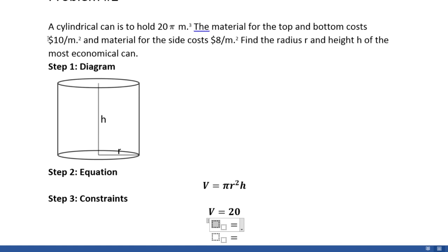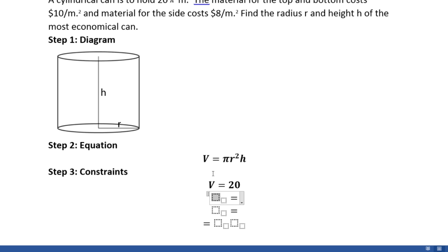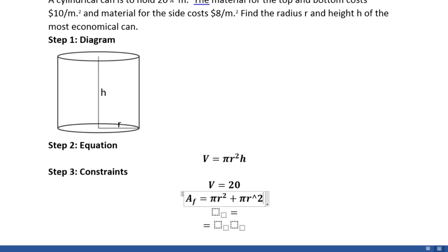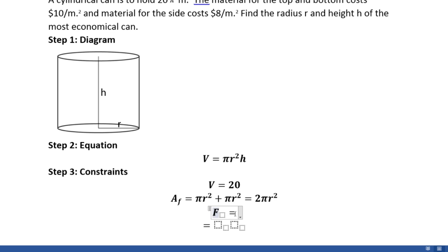Our second set of constraints are the costs. We're told that it's $10 per meter squared for the material on the top and the bottom, and $8 per meter squared for the material on the sides. We'll use A_f to represent the area of the top and bottom faces. The area of the top and bottom faces is πr² for the top plus πr² for the bottom, which is really just 2πr². For the area of the sides, we'll use A_s, which will be the equation for the rectangle wrapped around the cylindrical can: width = 2πr (the circumference) times h, giving us the area of the sides.